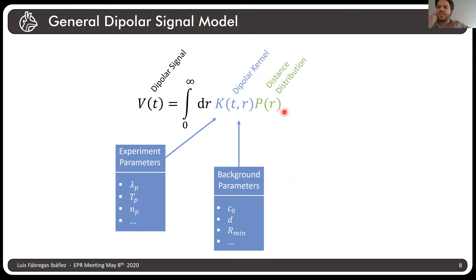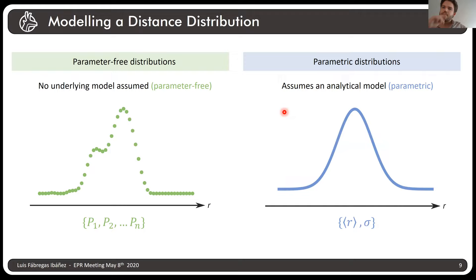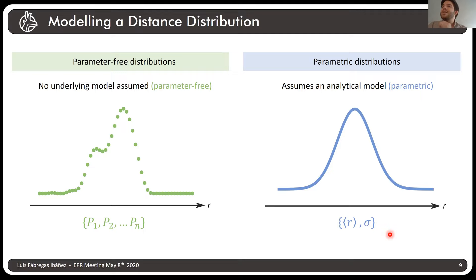Now, how do we model this distance distribution? We have two choices: a parameter-free distribution, where we don't assume anything about it, or a parametric model. Parametric distributions assume the distribution follows some analytical model — it can be a Gaussian, a Rician, or a random chain model. The good thing about parametric distributions is they depend only on very few parameters, making fitting simple and quick. However, if you have a parameter-free distribution, you fit every single point of the distribution individually, which requires protocols like regularization, making processing more computationally costly.